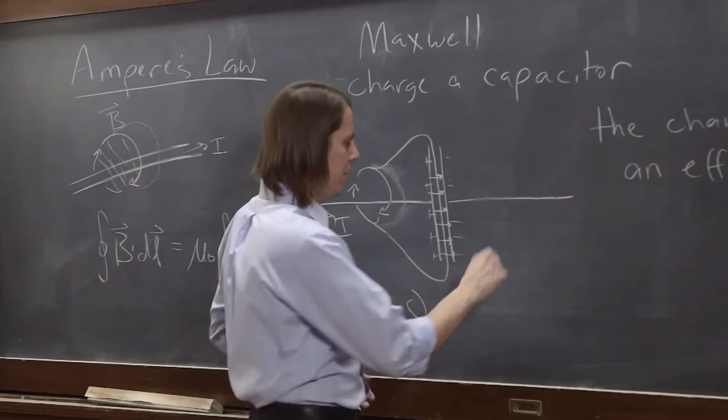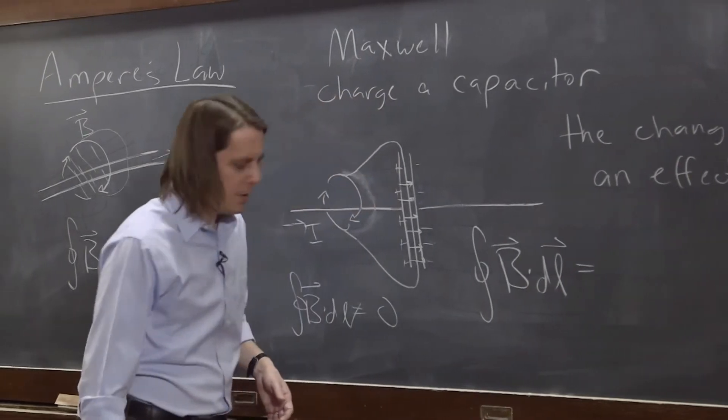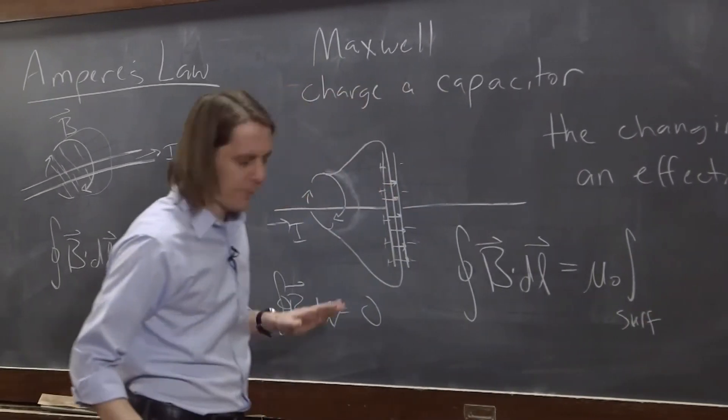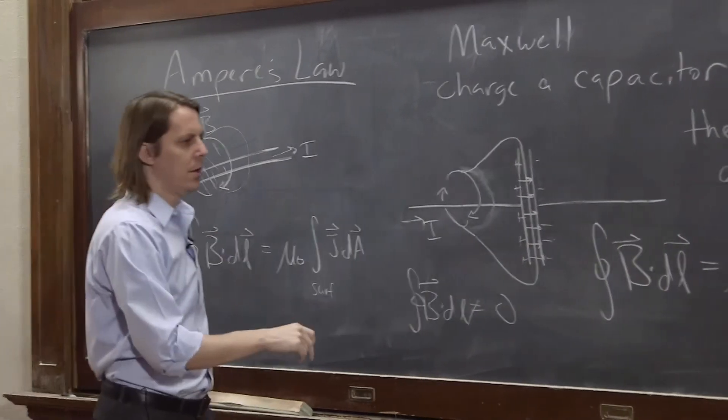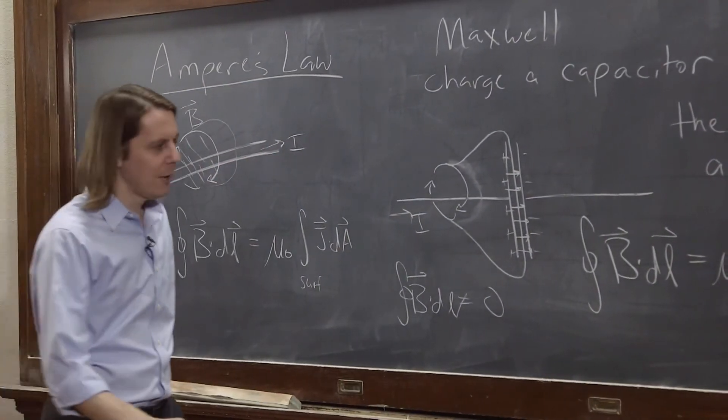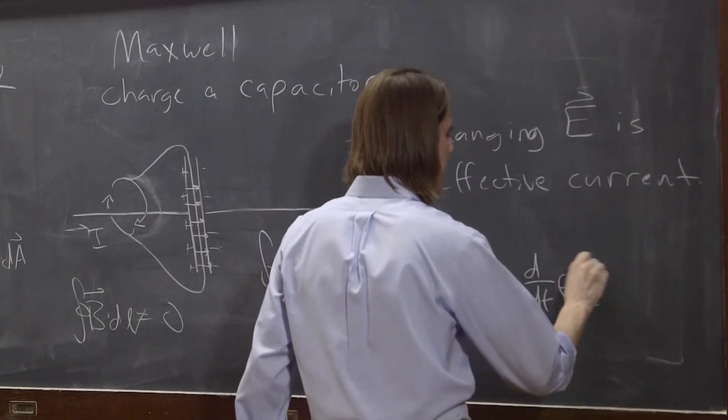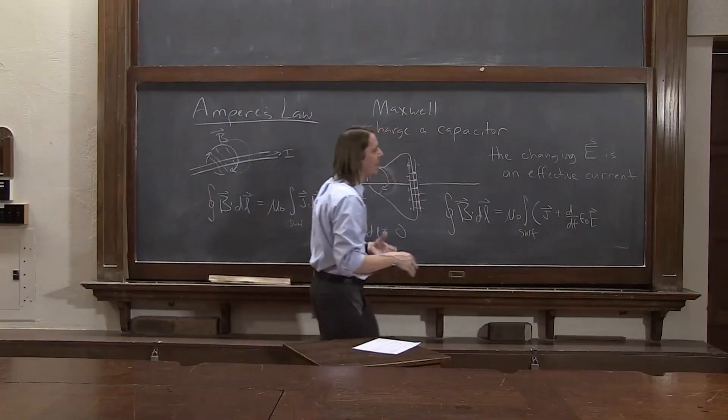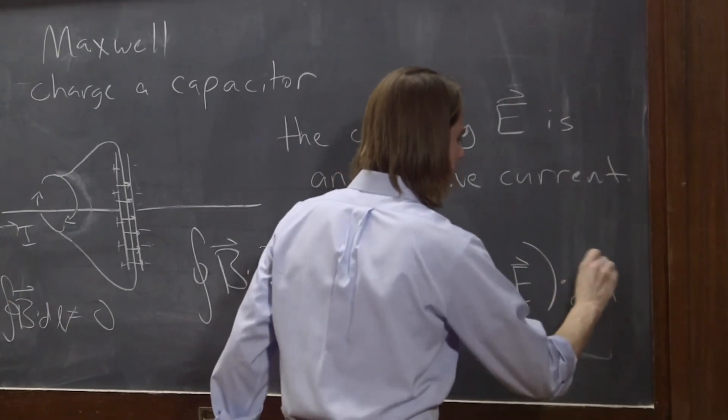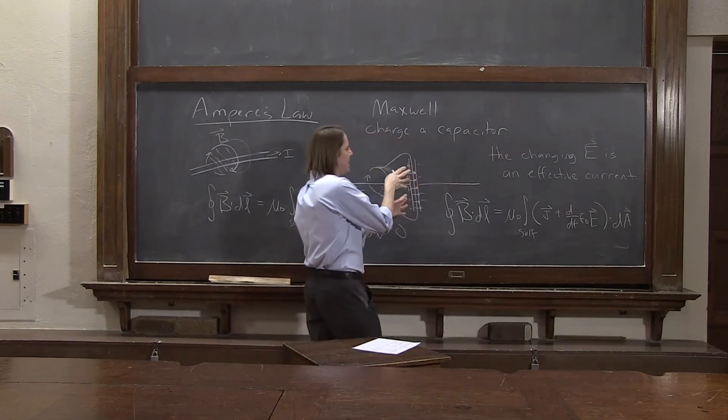So the way, then, he wrote Maxwell's equations, or the way he wrote Ampere's Law was the integral of B dot DL equals mu naught times this surface integral. And the first term is the current that we're used to, the J. That's just the current density. We thought about the current per unit area and the direction that it flows. But then he added this other term, plus d dt epsilon naught E. And, of course, the epsilon naught can be outside the d dt. Basically, epsilon naught times the time derivative of the electric field, and that's all dotted with dA. So the J is dotted with dA, which is really just I, mu naught I. But then he has, basically, the flux, the changing E field flux inside the capacitor.